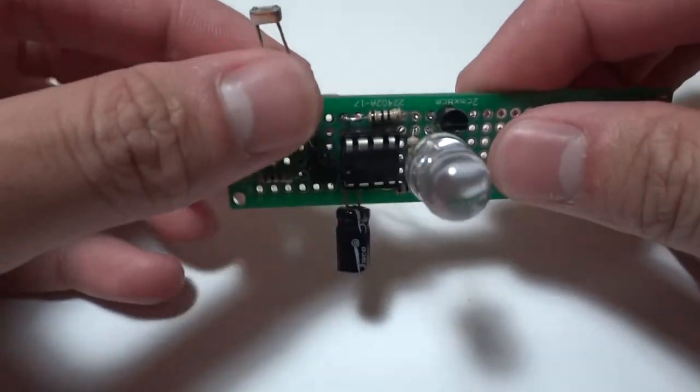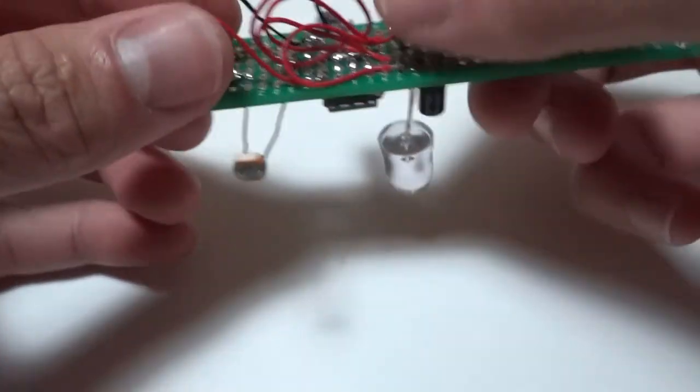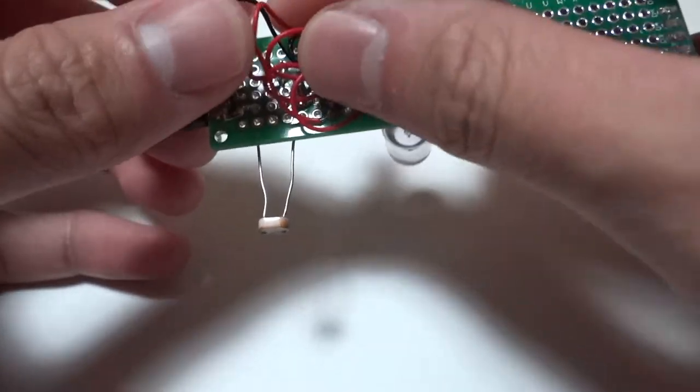So after testing it on the breadboard, we soldered everything together on the protoboard. And now we're going to make it a little bit more secure by adding some hot glue on the bottom.